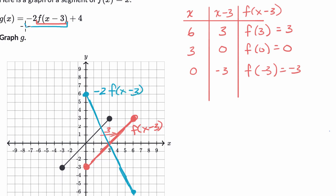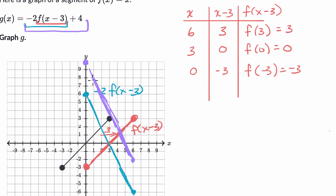Now let's finish all this up and do the full g of x by adding the four. We're just going to shift every point up by four. This point goes from six to ten. This point goes from negative six — shifting up by four gives negative two. And so we have a segment that looks like this. This right over here is g of x equals negative two times f of x minus three, plus four. And we're done.